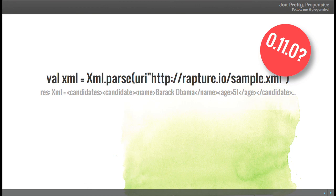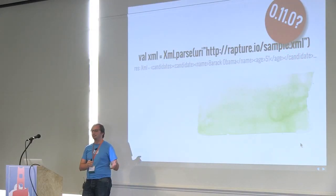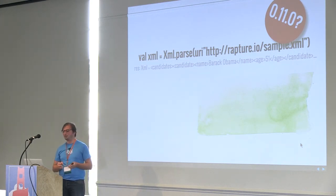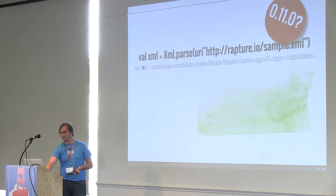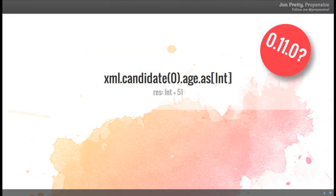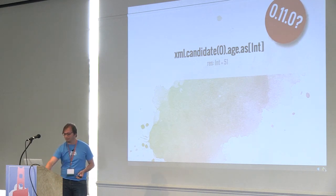Since Rapture JSON uses type classes to abstract over arbitrary ASTs, I thought: what if I plugged in an XML parser instead? So Rapture XML was invented. You can parse XML and get an XML object that is pretty much equivalent to the JSON one. We can call .candidate dynamically, get the first element, call .age on that, and extract an Int - all the same things we did with JSON. There are a few corner cases more complicated than with JSON, so there's more work to be done.